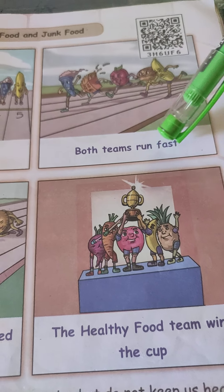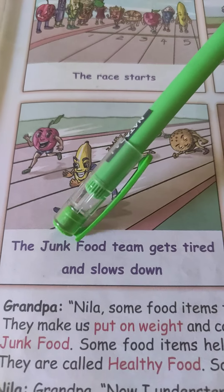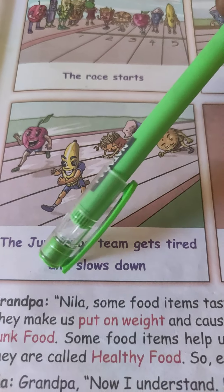Both teams run fast. The junk food team gets tired and slows down — junk food is unhealthy, so they are not able to move and they got tired. Now the healthy food team wins the cup, because healthy food gives health and energy to our body.